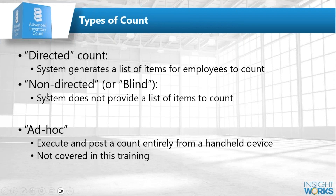The other mode is what we call non-directed — some call it blind, though all counts are blind. Non-directed means we're not telling you what items might be out there for you to find. You just go out and scan everything you find. That's best when using barcode scanners — you scan everything present, report back to the system, and it tells you where the discrepancies are.